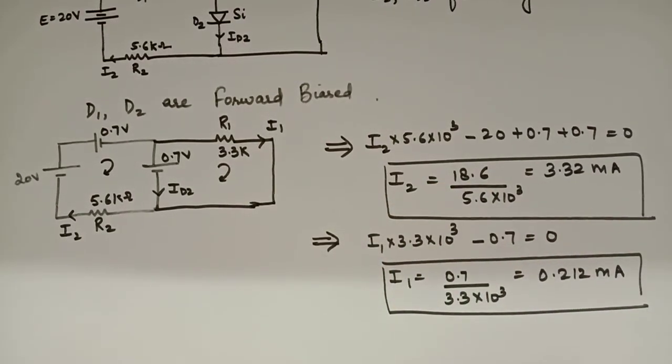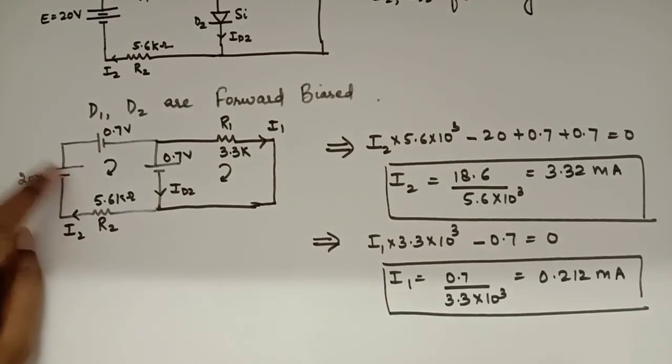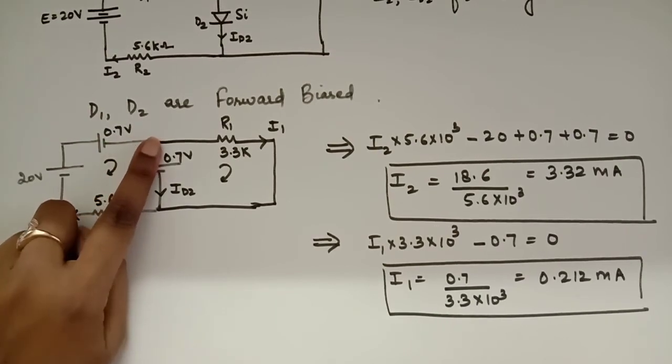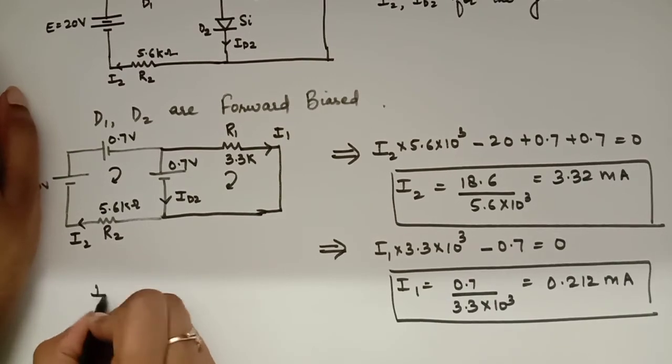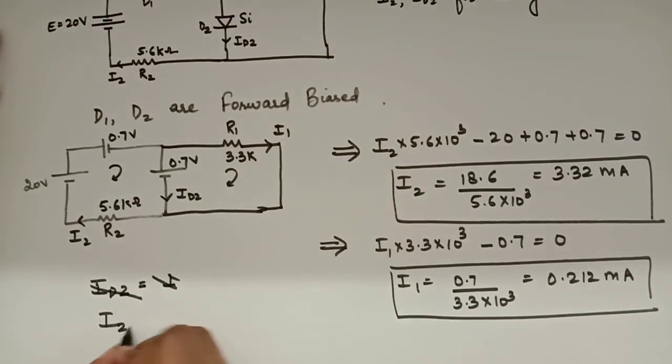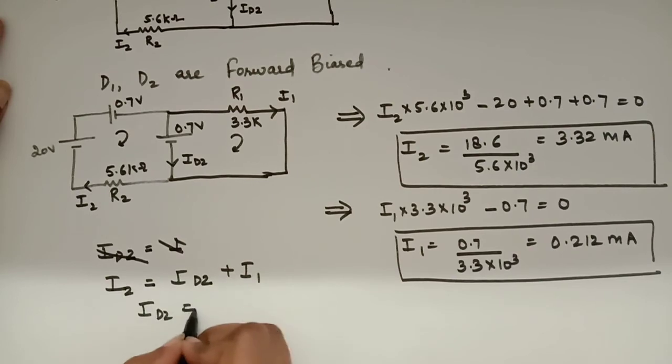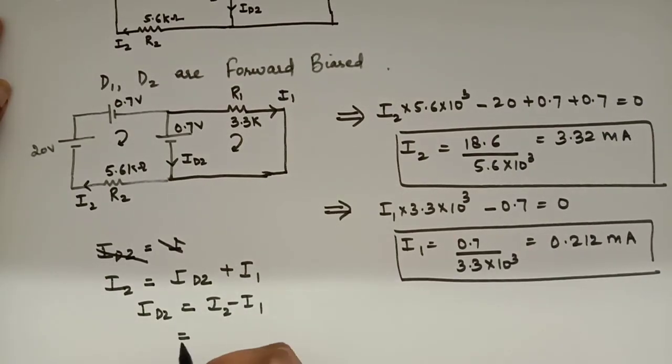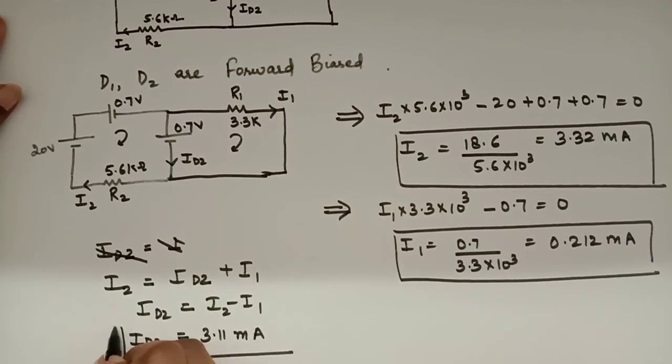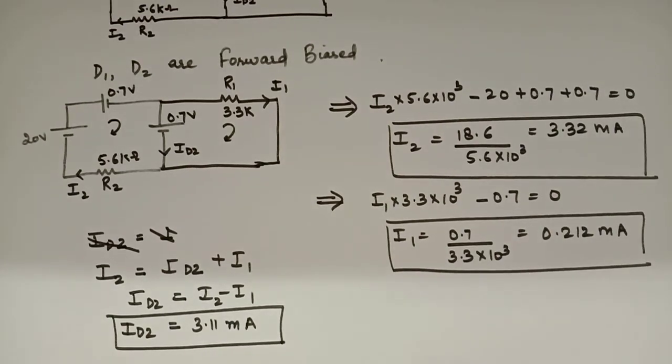Now I am done with I2. Now I apply KVL in the second loop and I find out from a simple wire I will start. I1 into 3.3 into 10 raised to the power 3 minus 0.7 is equals to 0. I1 equals to 0.7 by 3.3 into 10 raised to the power 3. And the answer I get is 0.212 milliampere. So this is the I1 that I am getting. I have got this I2. Now I am left with ID2. Now you can see from the network that here I2 is flowing. I2 is being divided into 2 parts that is ID2 and ID1. So ID2 is equals to I2 is equals to ID2 and I1. Now from here I2 minus I1 you have both the values and from here you will get ID2 is equals to 3.11 milliampere.